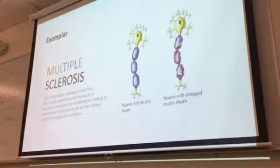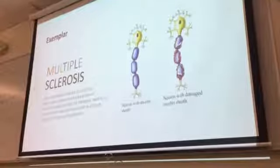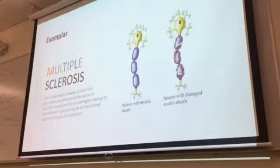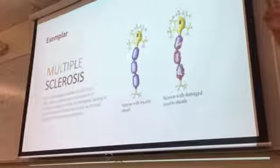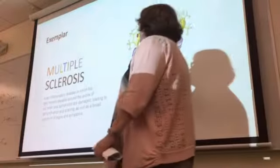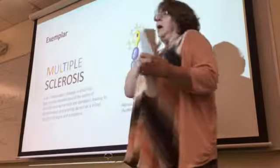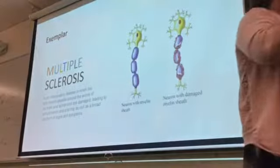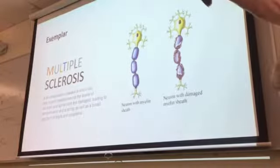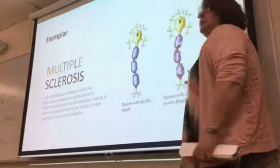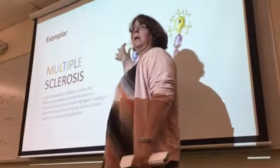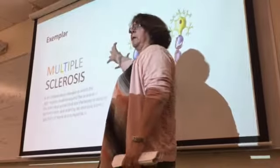We're only talking about two disorders this semester — last semester we did five. You're only being tested on two, but you could get something like ALS on the test and still need to know it. Some of it you'll be learning after the neuromuscular unit. Key nursing interventions include turning, repositioning, skin care, and respiratory hygiene. The one example I want to go into in depth is multiple sclerosis.